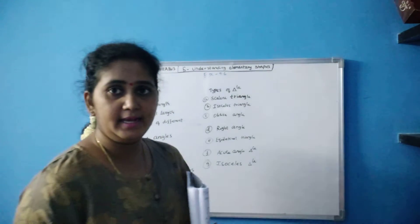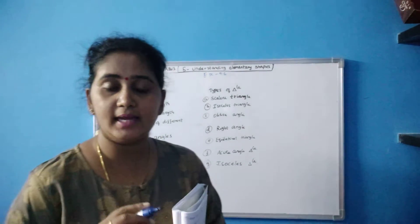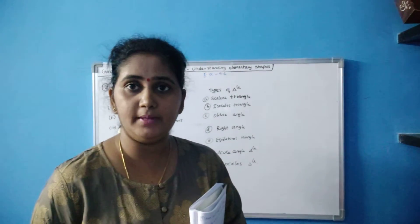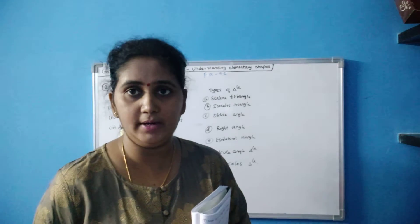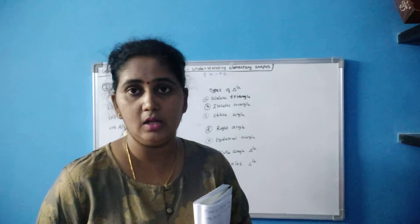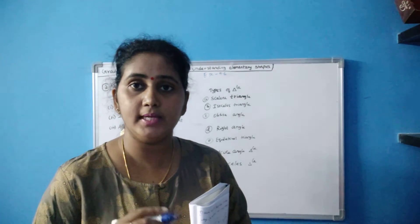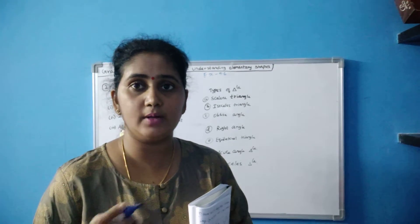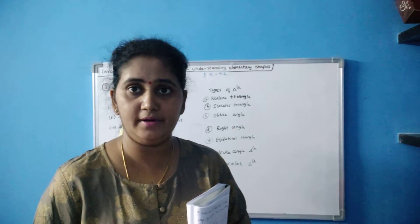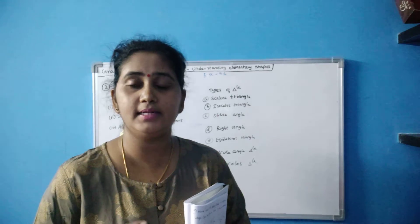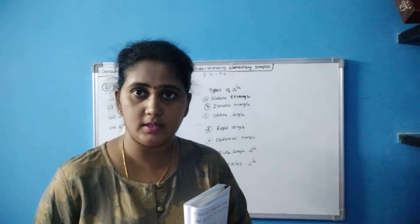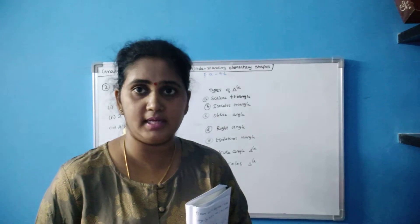In a triangle, if all the sides are equal, that is an equilateral triangle. If two sides are equal and one side is of different length, that is an isosceles triangle.